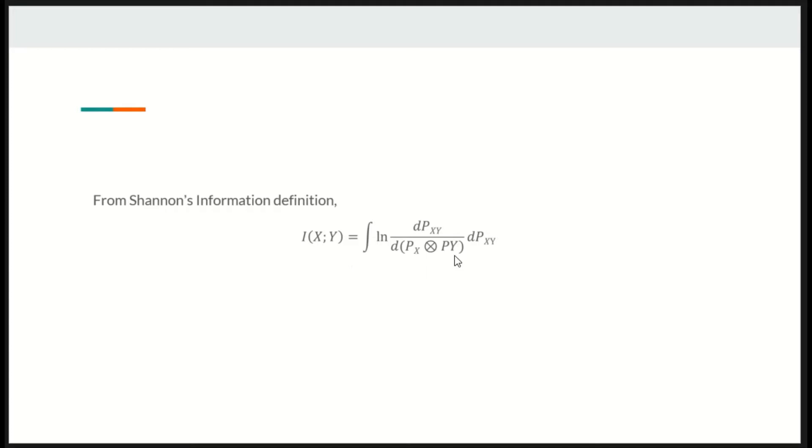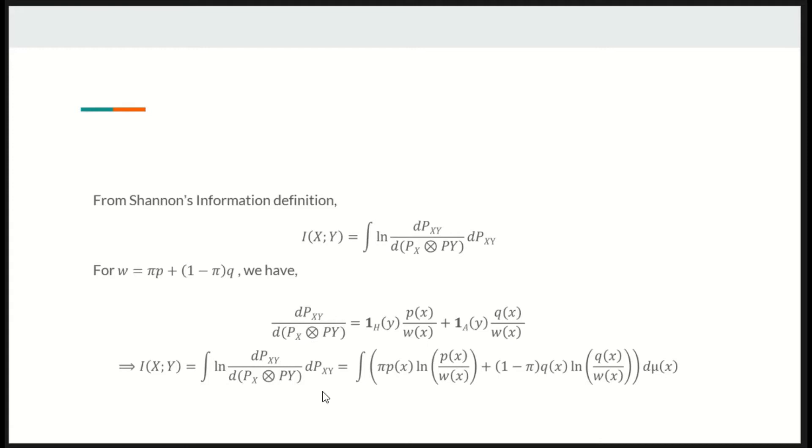According to Shannon's information definition, the mutual information is defined as follows. For W equals pi P plus 1-pi times Q, we have the following. This term is written as follows, where this term and this term are the indicator functions for hypothesis and alternate respectively.